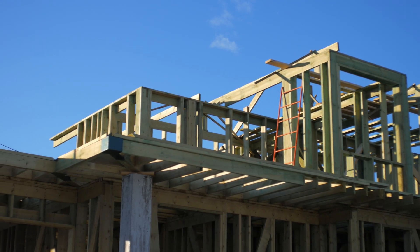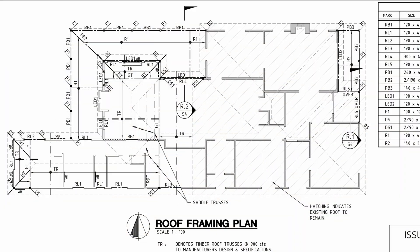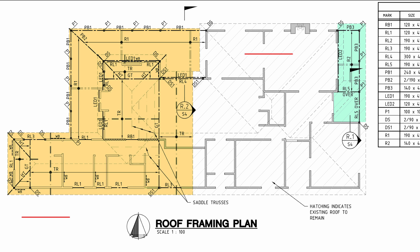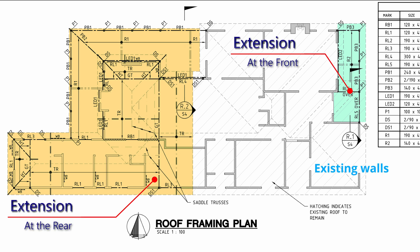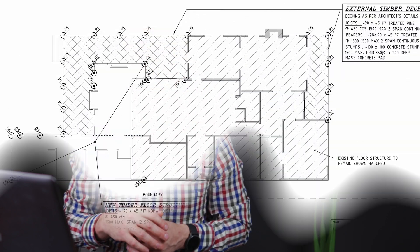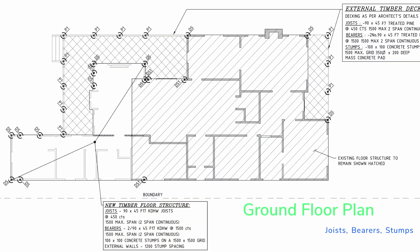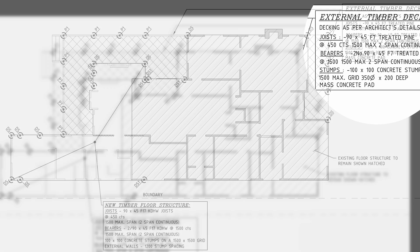Let's look at the framing of a simple timber framed house. Looking at the drawings here, we can see that we've got a building extension — out the front and out the back. We can see the hashing internally showing the existing walls which are shaded grey, and also hashing of the existing building that we're not really touching, so it's to remain as documented. We've also hashed the external areas as these need to be treated slightly differently, and we can also see that the deck framing is slightly different.